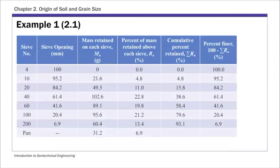Given the sieve analysis results, you have the sieve number used, the mass retained on each sieve, and for each sieve number the corresponding opening — so basically you know that particle size. That's what's given, and then the last three columns are your calculations.